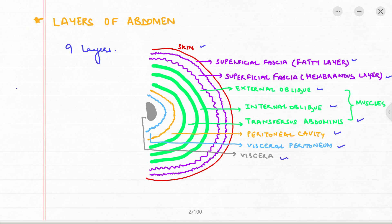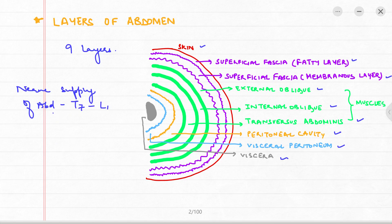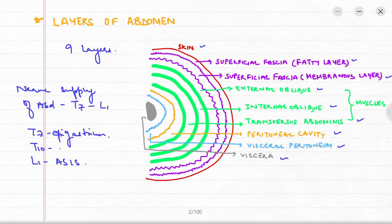The nerve supply of the abdomen is T7 to L1. To give a brief idea: at T7 we have the epigastrium, at L1 we have the anterior superior iliac spine, and somewhere in between at T10 we have the umbilical region.